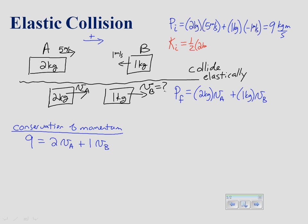Looking at the initial kinetic energy: it's ½ × 2 kg × (5 m/s)² for object A, plus ½ × 1 kg × (1 m/s)² for object B. Kinetic energies are always positive — they're scalars depending only on speed, so it doesn't matter that object B's velocity was to the left. When you square −1 m/s you get a positive answer. The kinetic energy of A is 25 J, of B is 0.5 J, giving a total of 25.5 J.